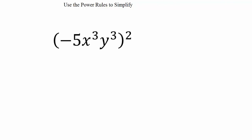We have three different power rules. Power rule 1 says that when we have an exponent raised to another exponent, we multiply those exponents together. Keep the base, multiply the exponents.